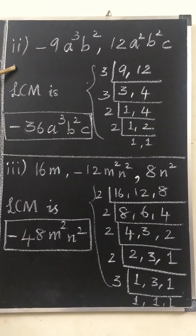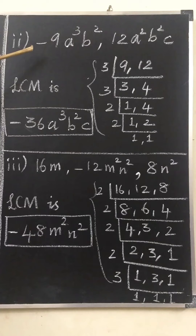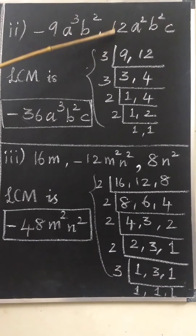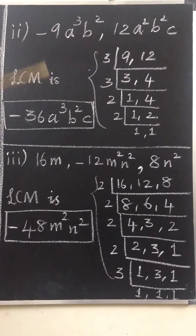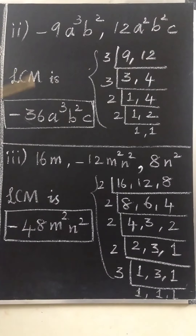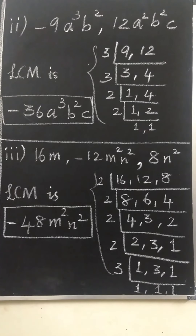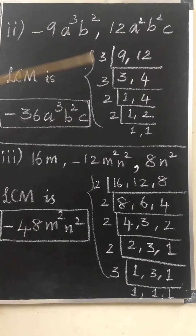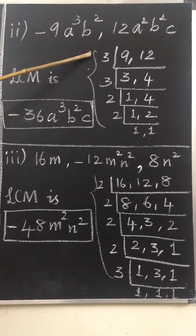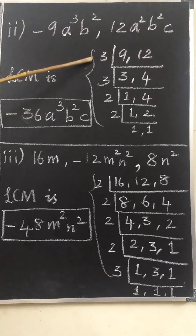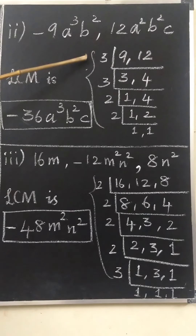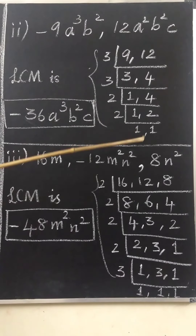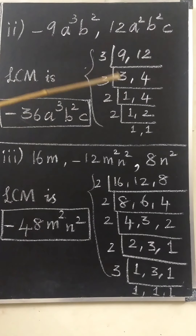Look at the next sum. The polynomials given are −9a³b² and 12a²b²c. Leave the negative sign for now — we will join it in the answer later. For 9 and 12, what is the LCM by prime factorization method? 3 is the common factor. Carry on the process till 1 comes, giving us 3, 3, 2, and 2.